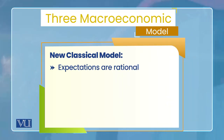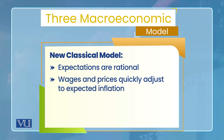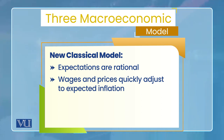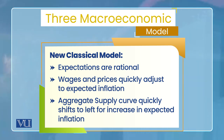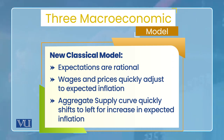In contrast, the new classical model has rational expectations. Along with rational expectations, the model assumes that wages and prices are quickly adjustable. Whenever any change comes in the economy, wages and prices adjust quickly and accordingly. For example, if there is an inflation shock in the economy causing prices to rise, the resulting rise in wages will happen quickly without any delay.